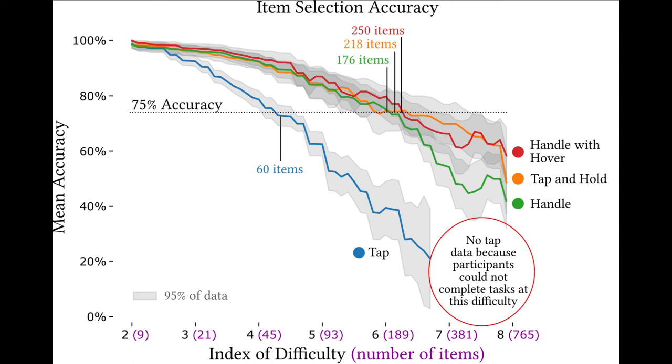At 75% accuracy, participants could only select a target item from 60 other items using tap, whereas they could select it from 176 to 250 items using one of the other techniques. That is a dramatic difference that validates our hypothesis that providing visual feedback allows users to interact with more data accurately.